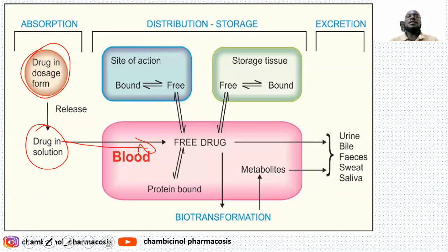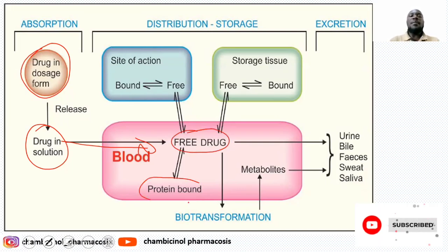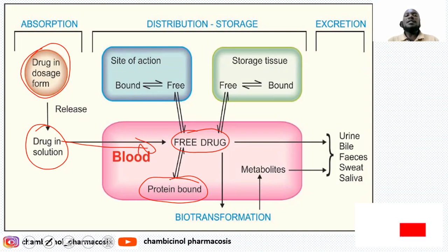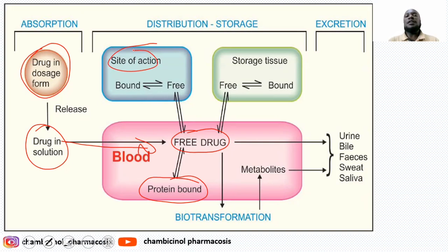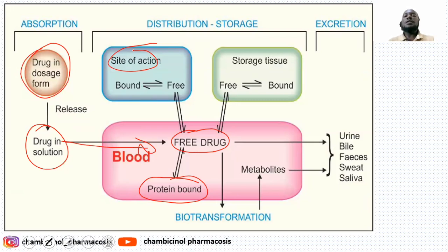Once it reaches the systemic circulation, some amount of the drug will be in free form, establishing equilibrium with drug bound to plasma protein such as albumin. The free form undergoes distribution to the site of action to mediate the pharmacological effect. The free drug in systemic circulation can also distribute to organs responsible for metabolism, where it is converted from non-polar to polar water-soluble form, forming a water-soluble metabolite.